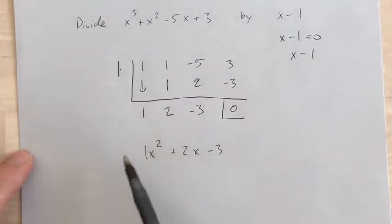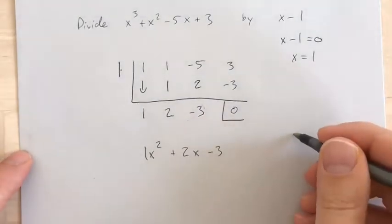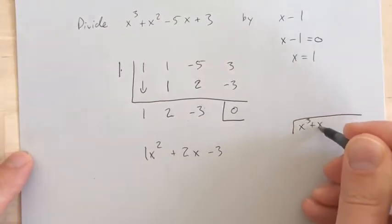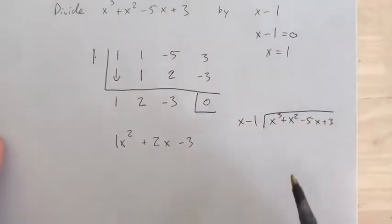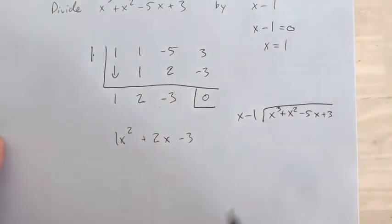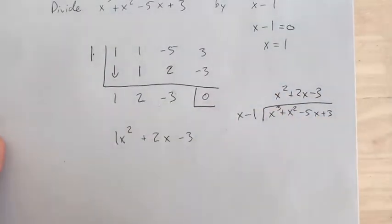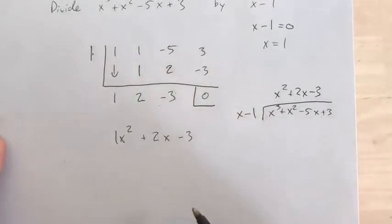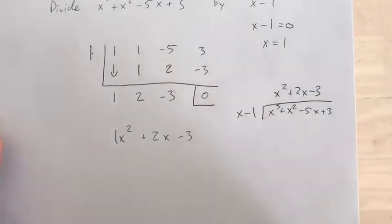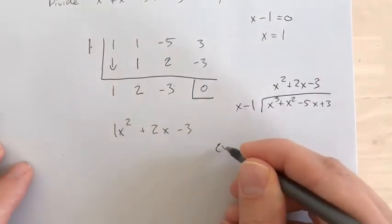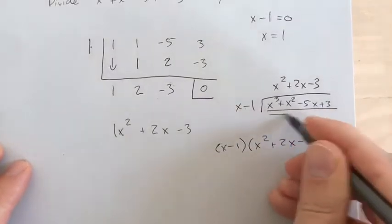The reason why this all makes sense is: if I were to write this as a long division problem, dividing it by x minus 1, the answer would be the same thing we got from synthetic — that would go up here. Just like with the previous problem, I could write this times this to get back to the original. So x minus 1 times x squared plus 2x minus 3 equals that right there.